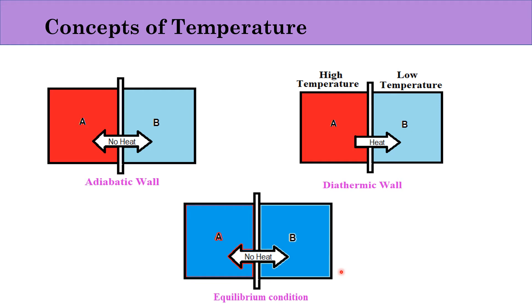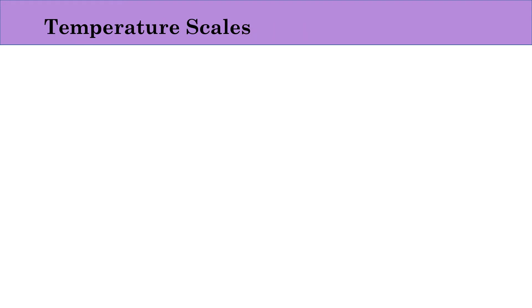The basic difference between heat and temperature is that heat is a form of energy that transfers from a hot body to a cold body, while temperature is the degree of hotness and coldness of a body. Heat flows from a hot body to a cold body, while temperature rises when heated and falls when an object is cooled. The SI unit of heat is joules, while the SI unit of temperature is Kelvin.